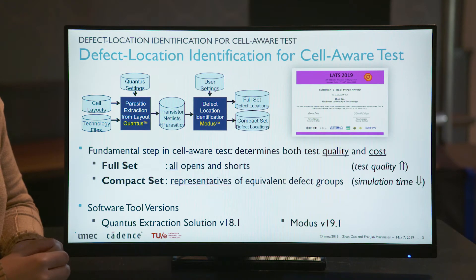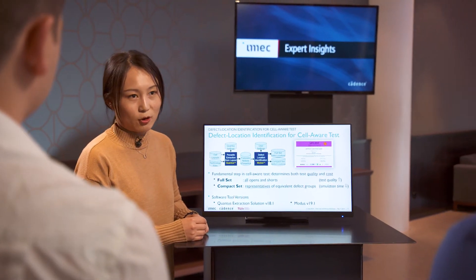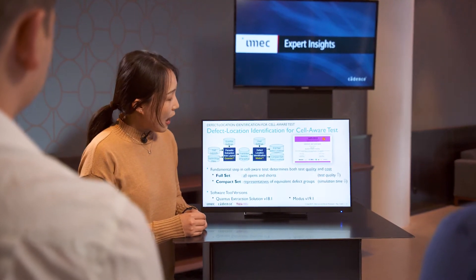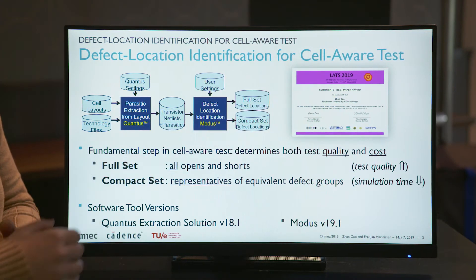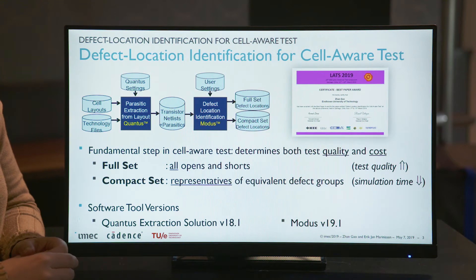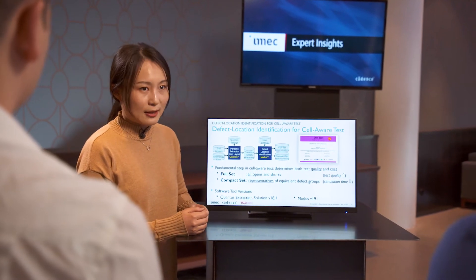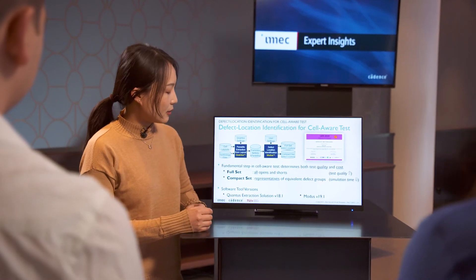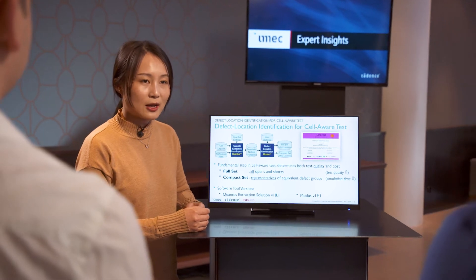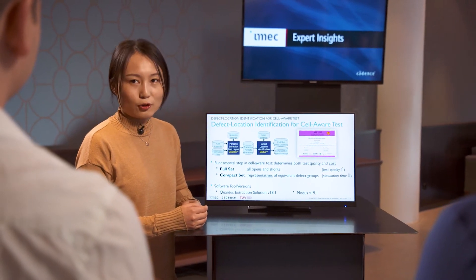As a fundamental step in SelvaTest, defect location identification determines both test quality and test cost. As you can see, the output of this flow is a full set and compact set of defect locations. The full set includes all opens and shorts for transistors and cell internal interconnections. The compact set is derived from the full set by selecting only one representative defect from each equivalent defect group.